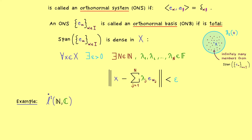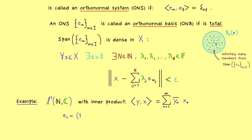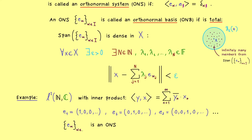For example, we already know our small L^2 space, which can be seen as a generalization of R^n, because the corresponding inner product looks like the standard inner product in R^n, just with infinitely many zeros. The canonical unit vectors look almost the same as well: E1 has zeros everywhere except for the first position, and then we continue with E2, E3, and so on. Here we have an ONS with infinitely many members, and it is easy to check that the Kronecker delta property is satisfied. The natural question is: is this also an ONB?